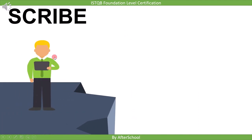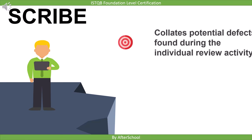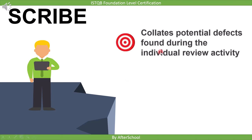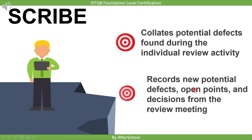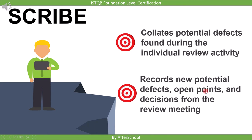Finally, we will see the responsibility of the scribe. The points are very simple. Scribe collates potential defects found during the individual review activity and records new potential defects, open points, and decisions from the review meeting.